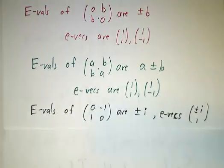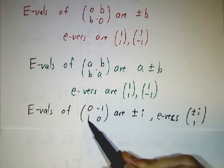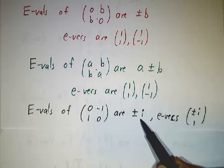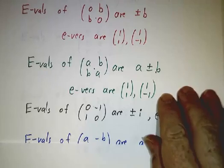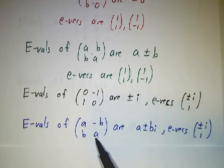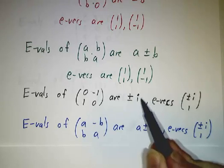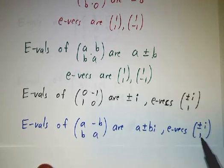You can also do this with complex eigenvalues and eigenvectors. We saw that the matrix (0,1,-1,0) had eigenvalues plus or minus i, and eigenvectors plus or minus (i,1). So if you scale that up by a factor of b and add a times the identity, you wind up with a plus or minus b times i, and the eigenvectors are still plus or minus (1,1).